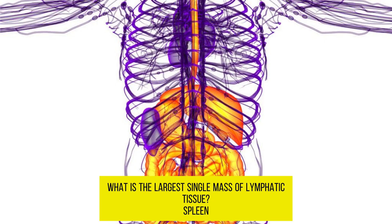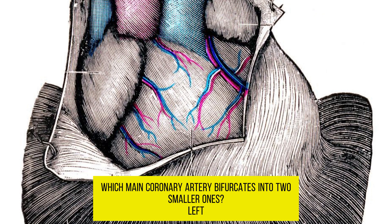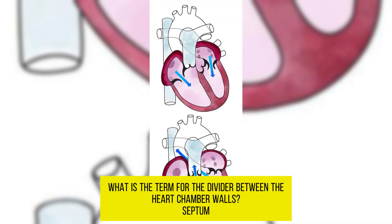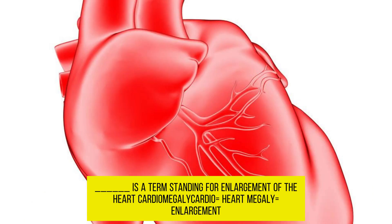What is the largest single mass of lymphatic tissue? The spleen. Which main coronary artery bifurcates into two smaller ones? The left. What is the term for the divider between the heart chamber walls? Septum. The term for enlargement of the heart is cardiomegaly — cardio equals heart, megaly equals enlargement.